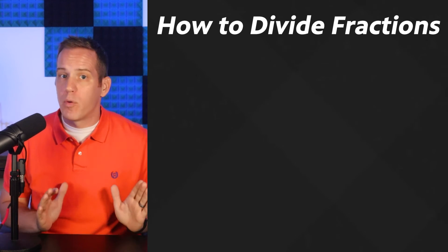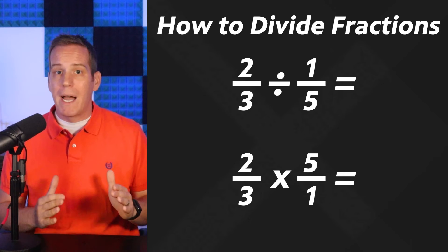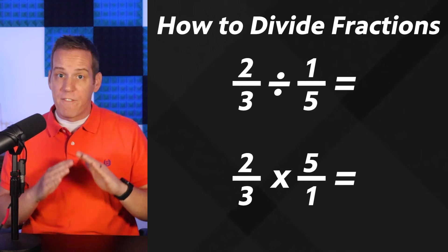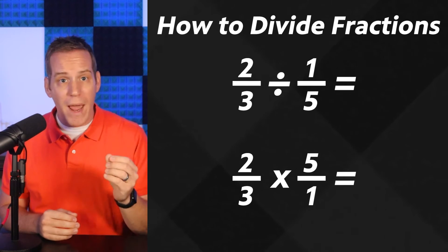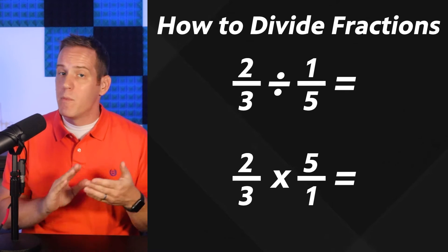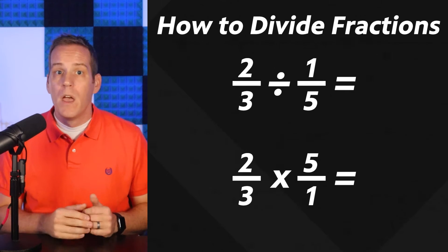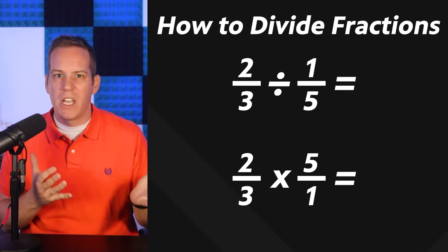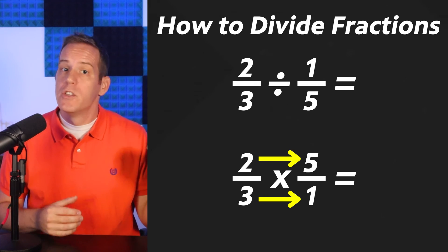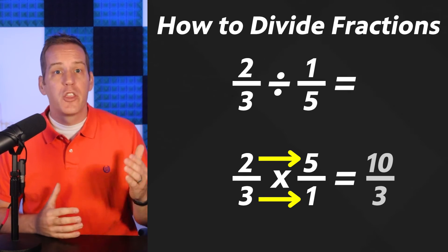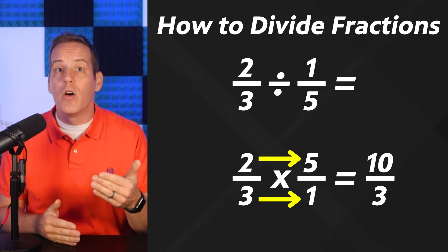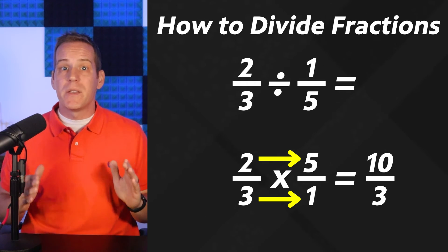Alright, now back to our original problem. We're multiplying by the reciprocal: two-thirds times five over one. And from here we just treat it like a multiplying fractions problem. How do we do that? We check for cross simplifying and then we multiply straight across. We can't cross simplify here because the diagonal pairs don't share any common factors besides one. So it's time to just multiply straight across. Two times five is ten and three times one is three, so we've got the beginning of our answer which is ten over three.